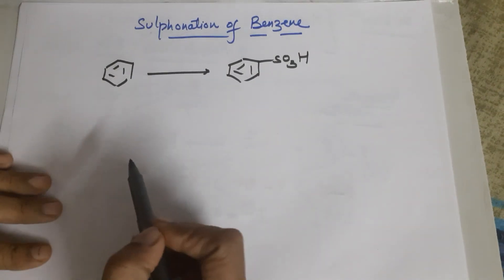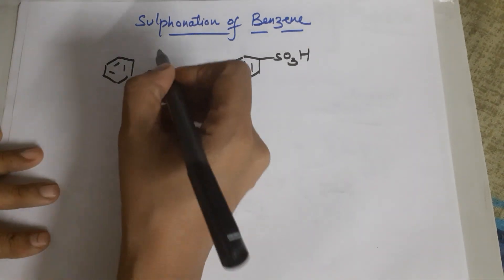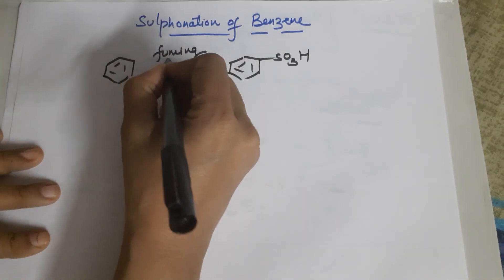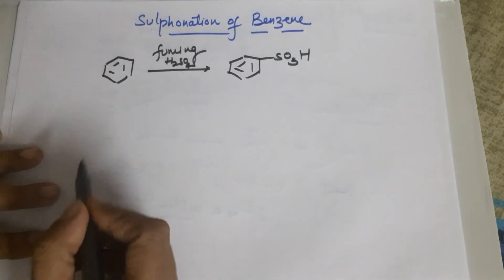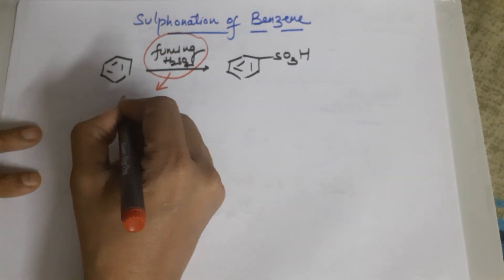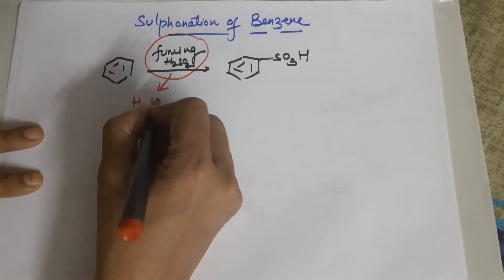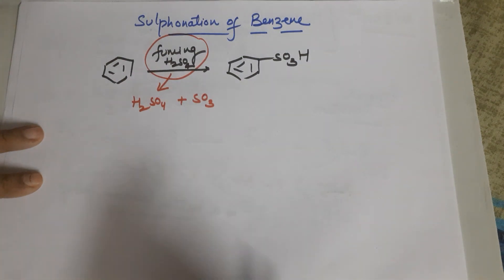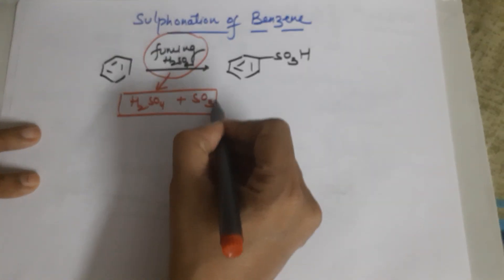Which means you require a reagent. The reagent that we use here is called fuming sulfuric acid. Now what does this mean? Fuming sulfuric acid is nothing but sulfuric acid having SO3 gas in it. This is called your fuming sulfuric acid.